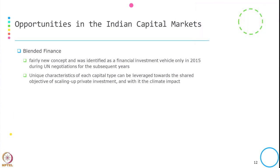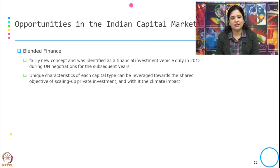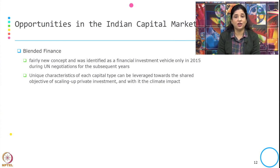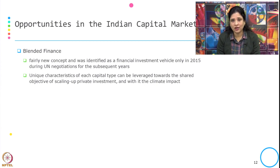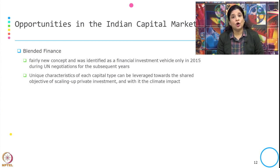There is also blended finance, a fairly new concept identified as a financial investment vehicle in 2015 during UN negotiations. The unique characteristic of each capital type can be leveraged towards the shared objective of scaling private investment with climate impact. Whether it is a green bond, blended finance, or any other environmental bond or instrument, each type can be leveraged towards the shared objective of investment to reduce climate impact or address risks associated with unsustainable models.